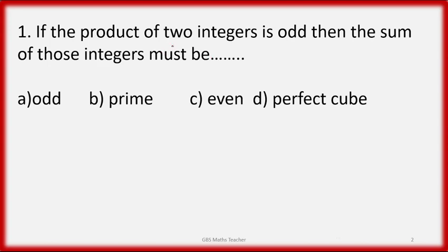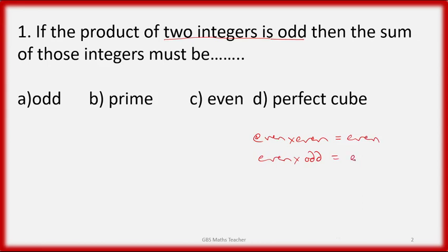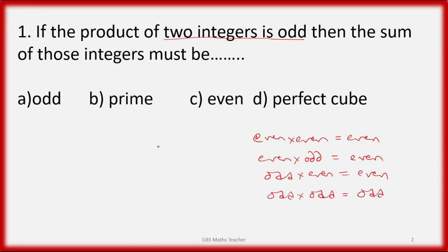We have two integers. For the product to be odd, let's consider the cases. Even times even gives even. Even times odd also gives even. Odd times even likewise gives even. Only odd times odd gives an odd result. So for the product to be odd, both integers must be odd.